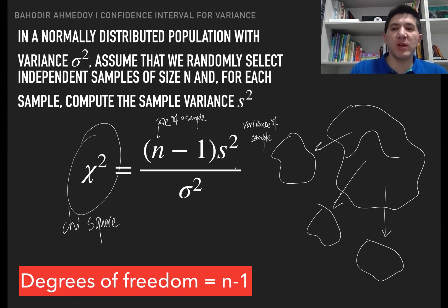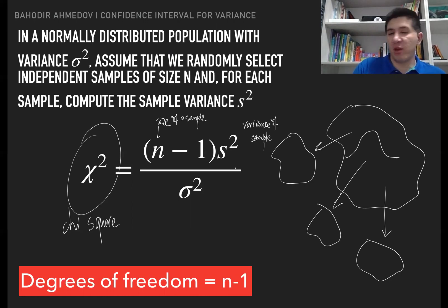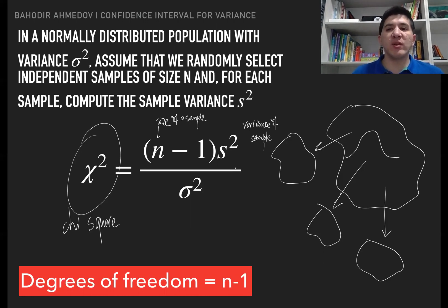The degrees of freedom is very easy to calculate — we just take the sample size and subtract one. For example, if the sample size is 15, the degrees of freedom is simply 14. Depending on the degrees of freedom and the sample size, we are going to have different shapes for the chi-square distribution.